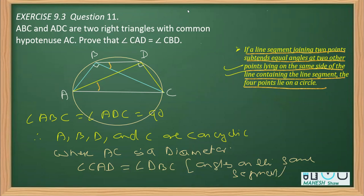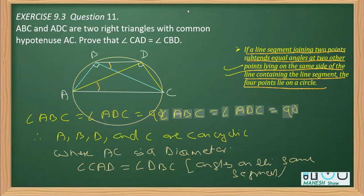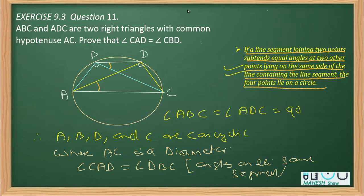So this is how the proof is done. First, we prove the figure is a cyclic quadrilateral by showing the two right angles are equal, making all four points concyclic. Then, since it is a cyclic quadrilateral, we apply the angles on the same segment property to conclude that the two required angles are equal.